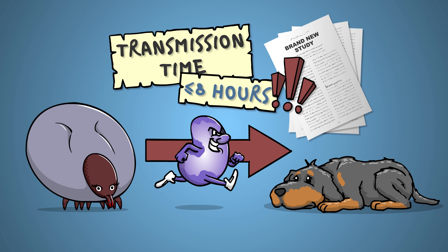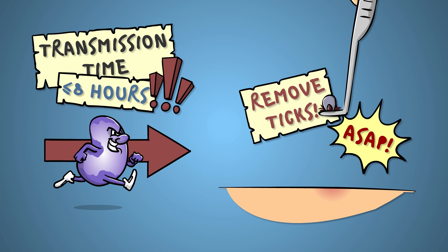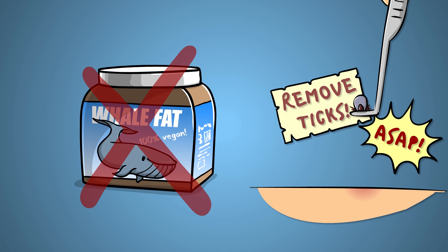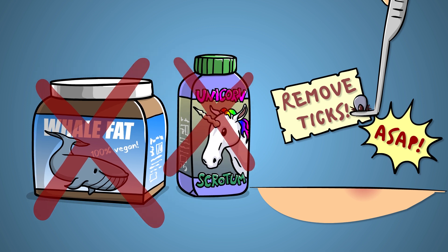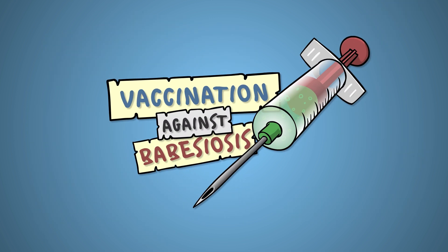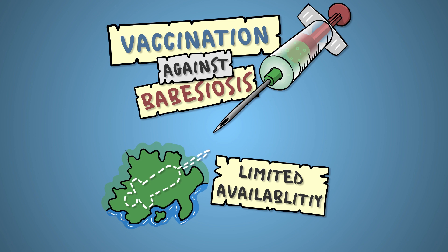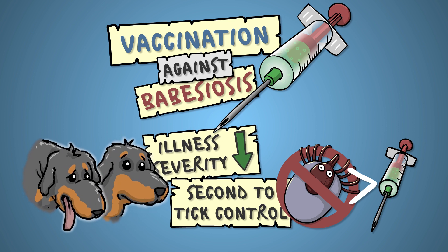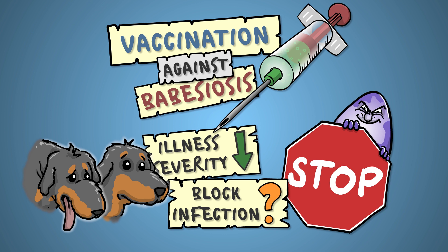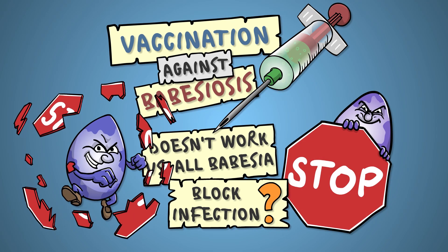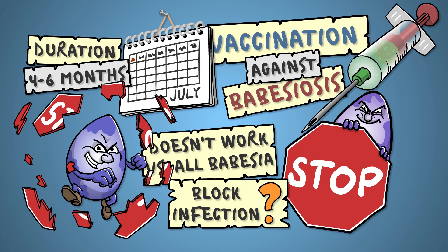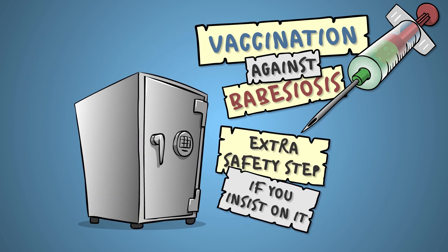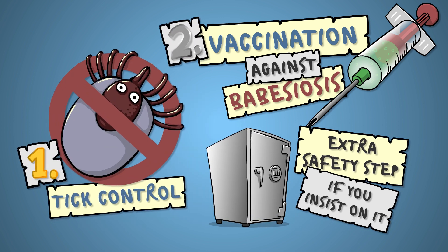Possibly even less. This is why you should remove any tick you find on your dog as soon as possible. Check out my other video for tick removal tips. Vaccination against Babesiosis, if available in your country, is also an option, albeit a less effective one than tick control. It reduces the severity of a future disease but doesn't reliably block infection. Plus, it's only effective against some Babesia species and doesn't protect for much longer than 4 to 6 months. It could still be something to consider adding to your prevention checklist after tick control in areas of high Babesia prevalence.